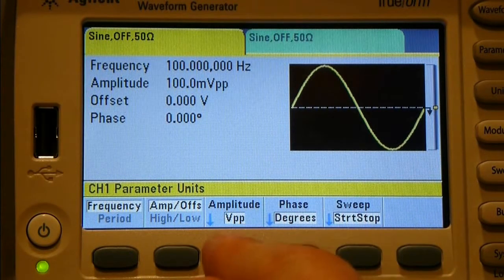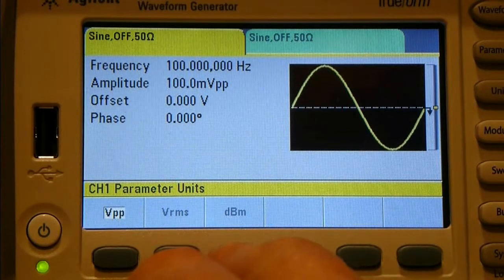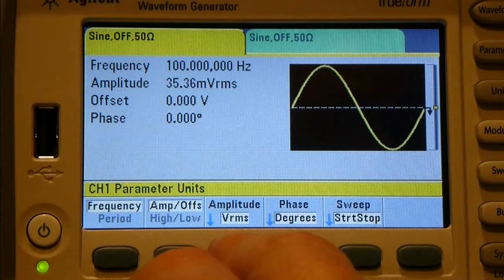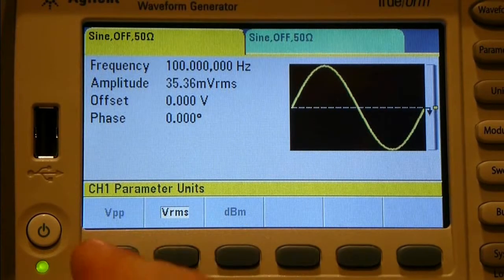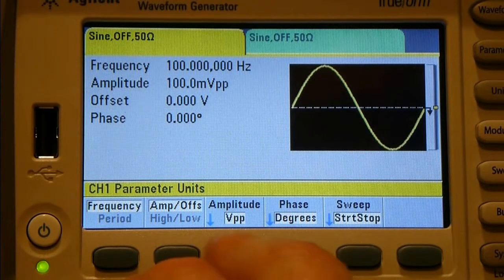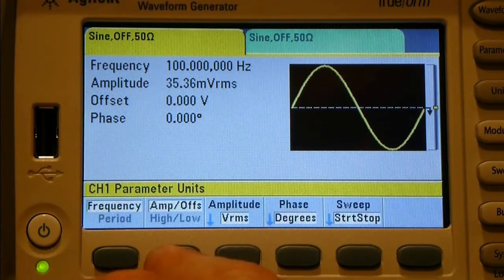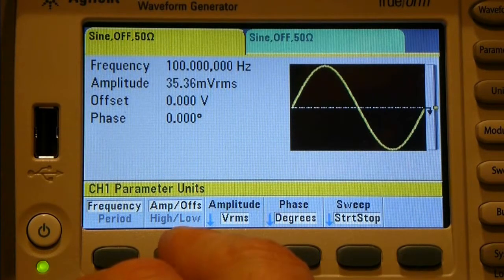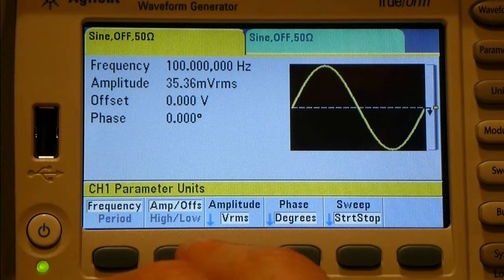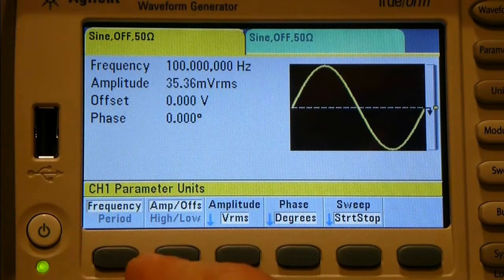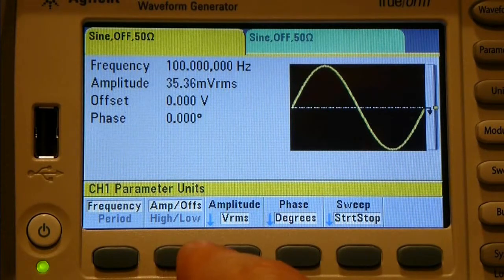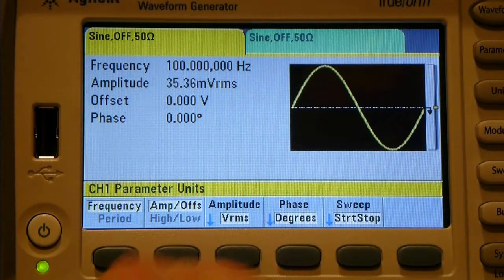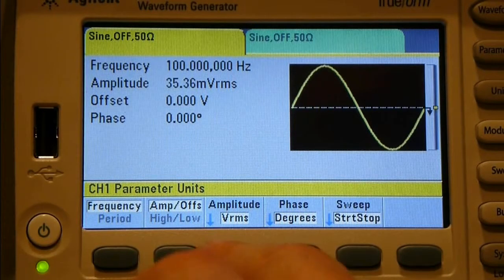When you've got amplitude offset, you've got the option of amplitude VPP, so that's peak-to-peak. You can say amplitude peak-to-peak, amplitude volts RMS. So you can see that when I pick peak-to-peak, that's 100 mV peak-to-peak. If I pick RMS, it's changing itself automatically to 35.36 mV.